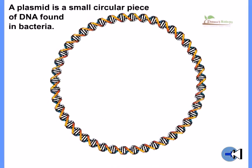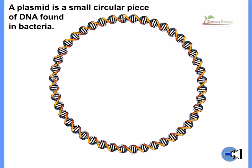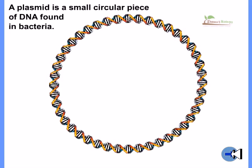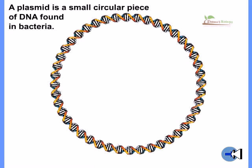A plasmid is a small circular piece of DNA found in bacteria which is extra chromosomal in nature and can replicate itself.